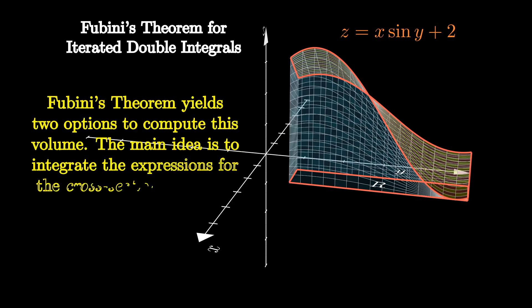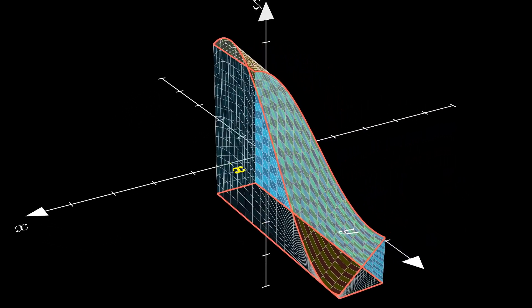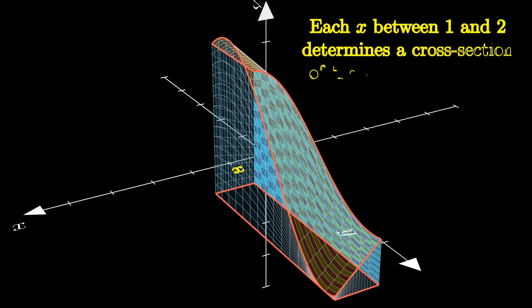Fubini's theorem yields two ways to compute this volume. The main idea is to integrate the expressions for the cross-sectional areas of this solid. The trick is to hold one of the variables constant, as you're about to see.